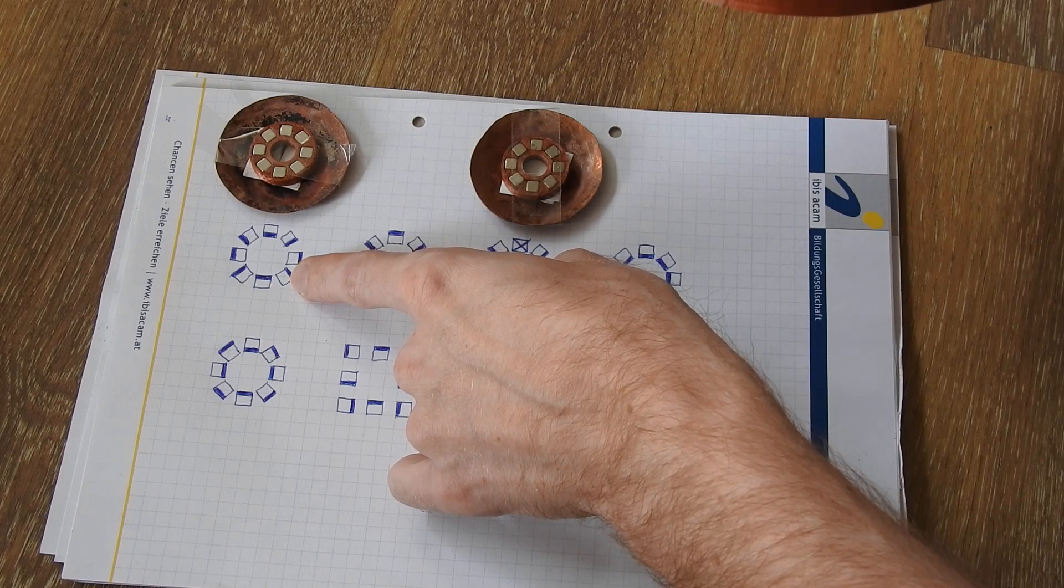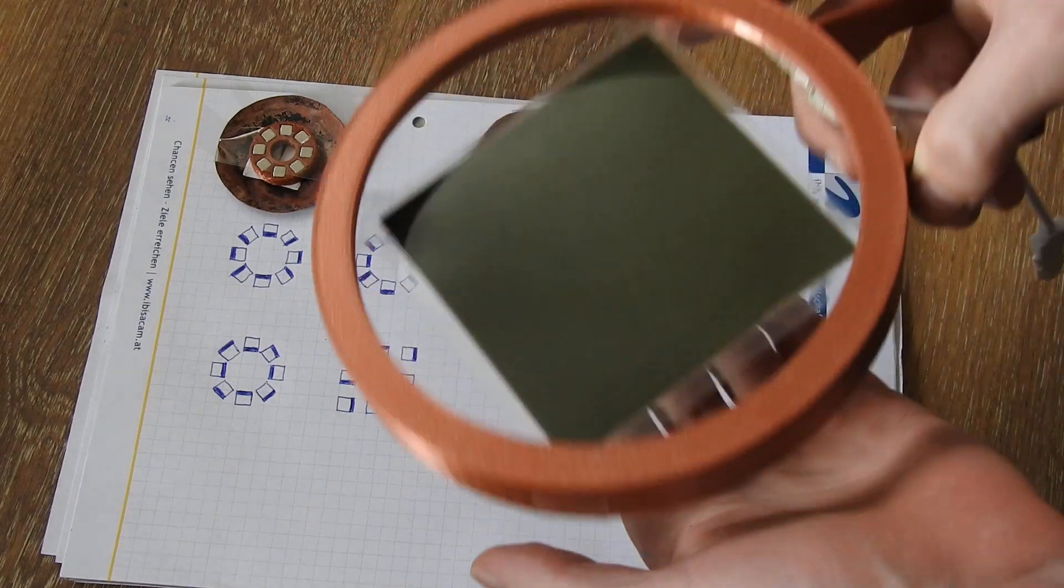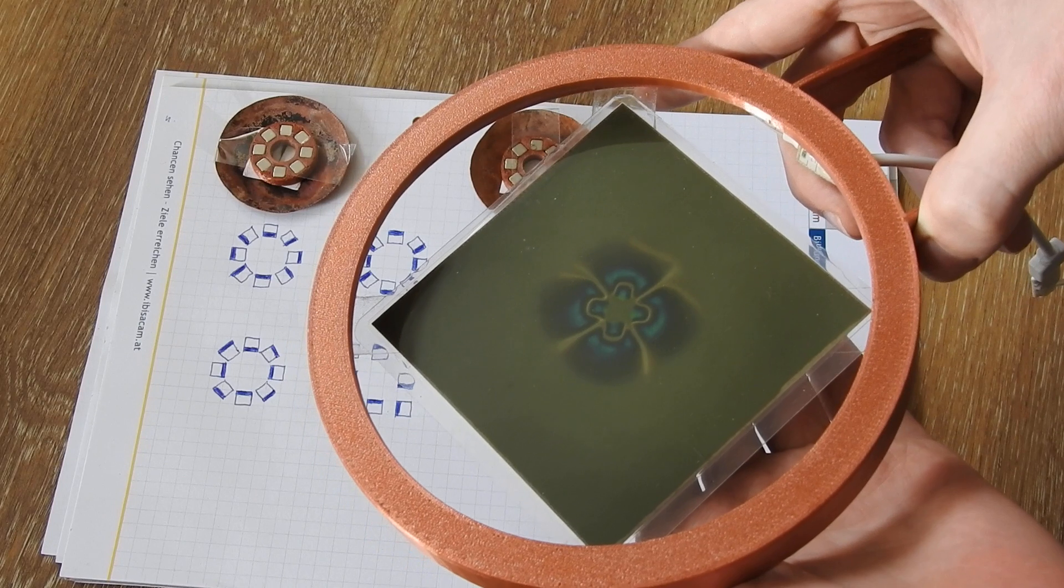Now we move on to the next array. This is this array. This focuses the field to the outside like you see here.